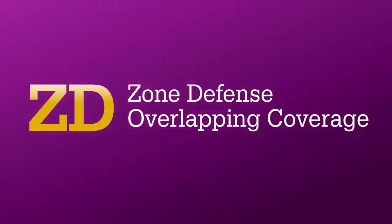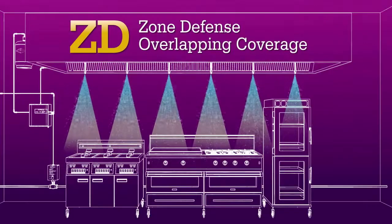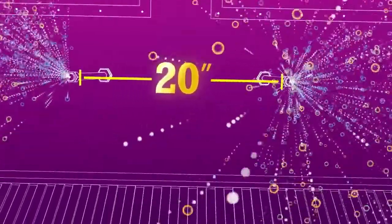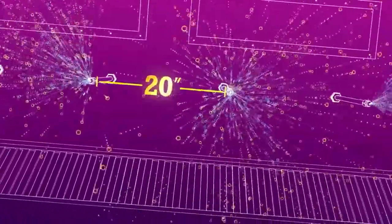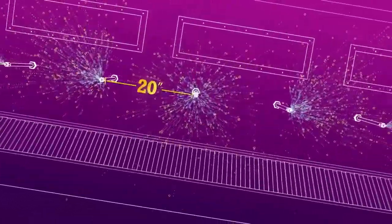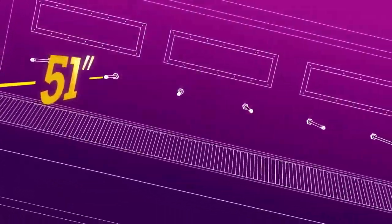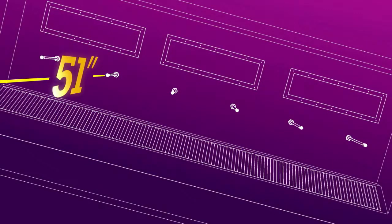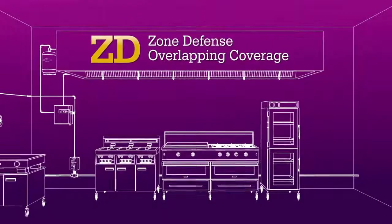While our ZD or zone defense system offers overlapping coverage in which identical nozzles are spaced 20 inches apart regardless of the appliance, this creates an overlapping discharge pattern. With the ZD system, nozzles can be placed up to 51 inches above the appliance and centered in the zone of protection. Amerex was the first to offer overlapping coverage.